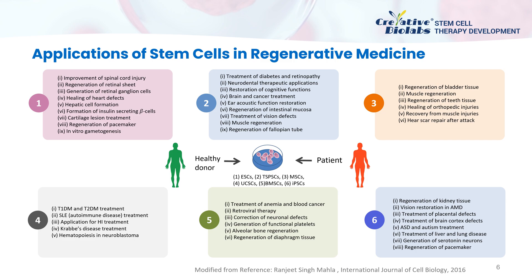Mesenchymal stem cells can be applied to treat bladder deformities, dental problems, and muscle degeneration. Umbilical cord stem cells can be applied to treat diabetes and immune diseases. Bone marrow stem cells can be applied to treat AIDS, neurodegenerative diseases, and blood cancer. In conclusion, the therapeutic use of stem cells has great potential in treating severe injuries or chronic disease conditions, in a state where the body's own regenerative responses do not suffice.